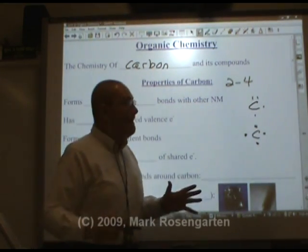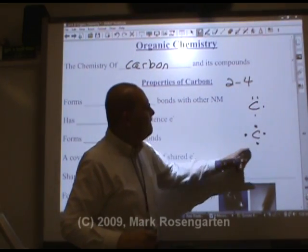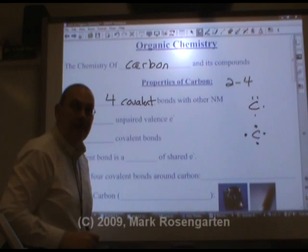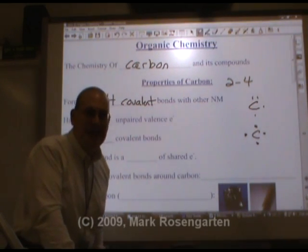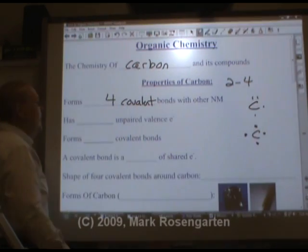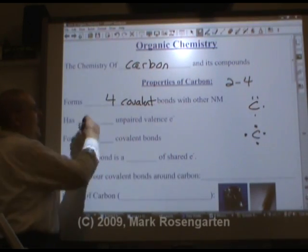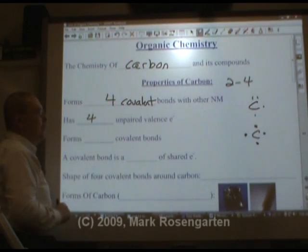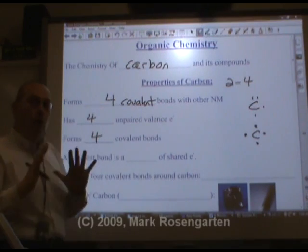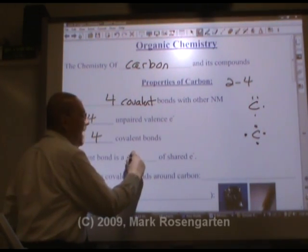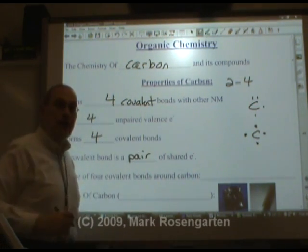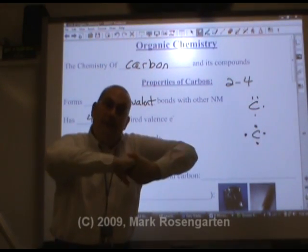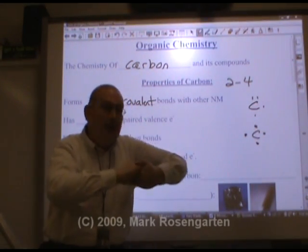What does that mean? That means that carbon can form four covalent bonds — four. It's like the ultimate chemistry tinker toy. It has four unpaired valence electrons when it forms organic compounds. A covalent bond is a pair of shared electrons — it's like a handshake. You need one hand from one person and one hand from the other person, and then you can shake.